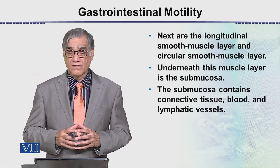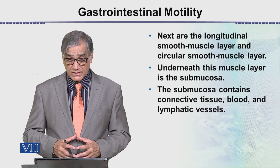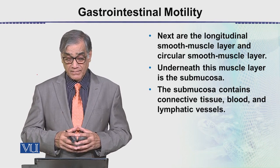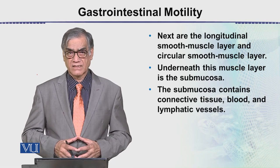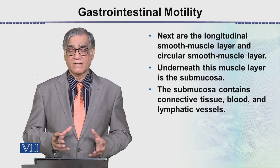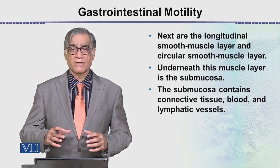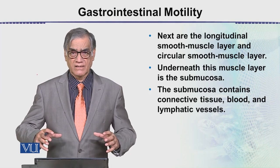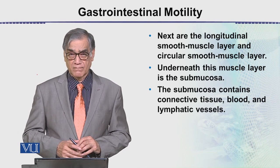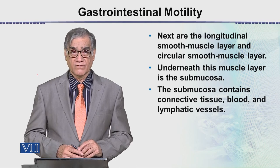The submucosa contains connective tissue, blood vessels, and lymphatic vessels. When we look at this microscopically, these structures become visible. All of these things will become clear when we study the villi in detail — all these structures will be visible inside the villi.